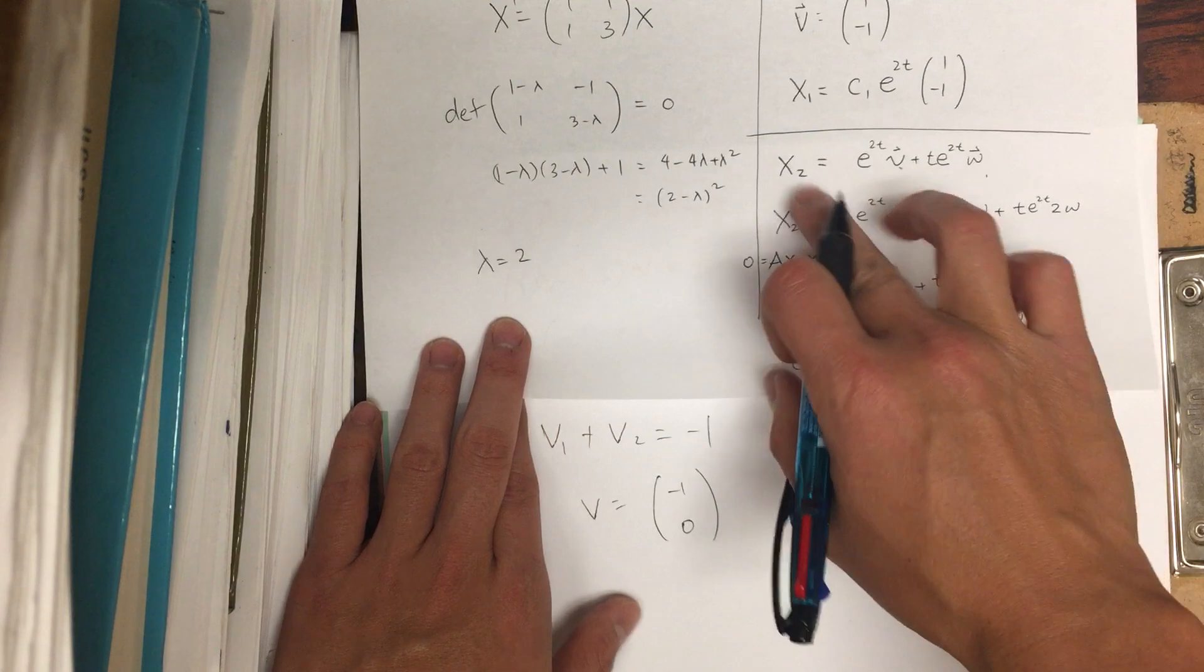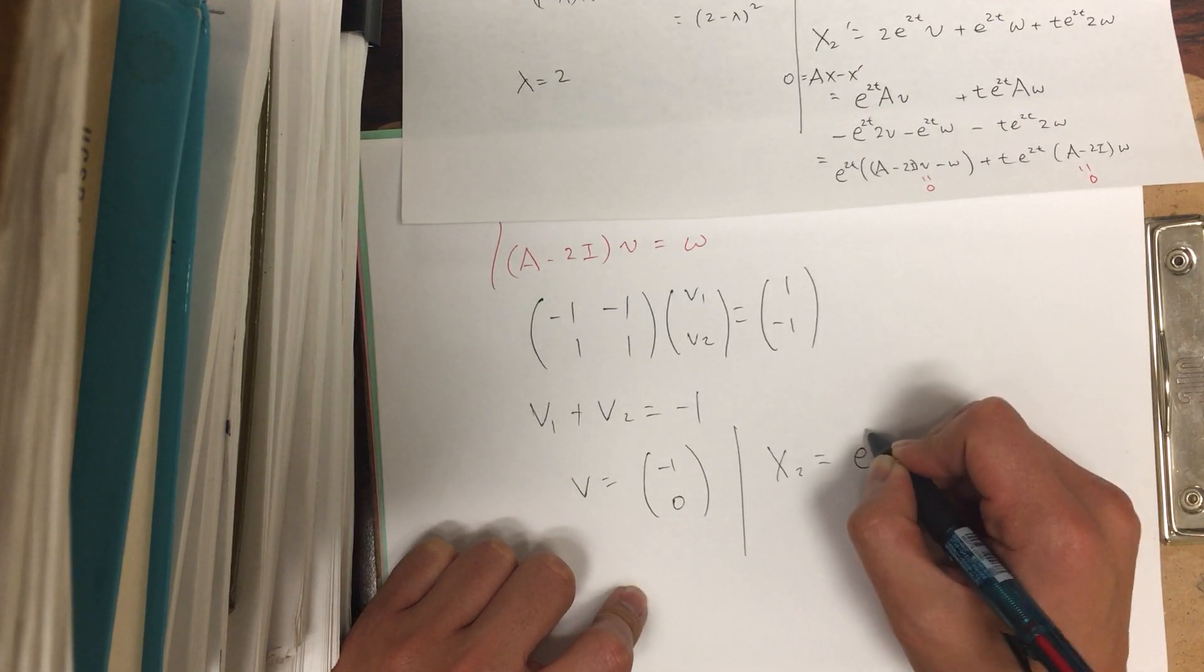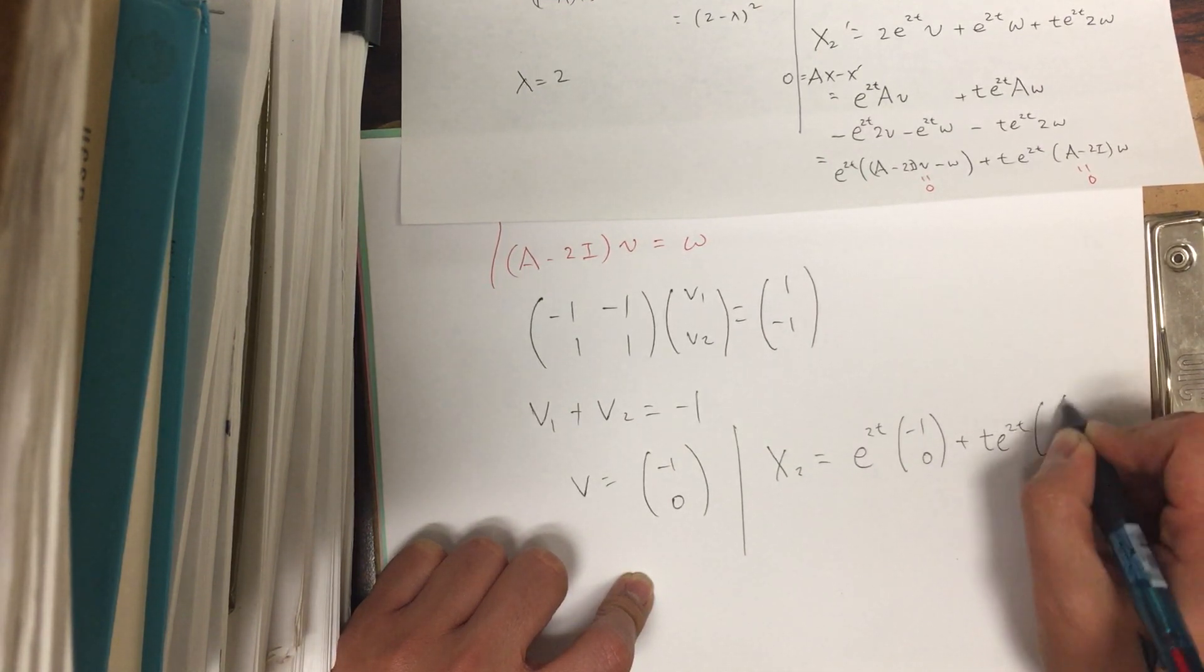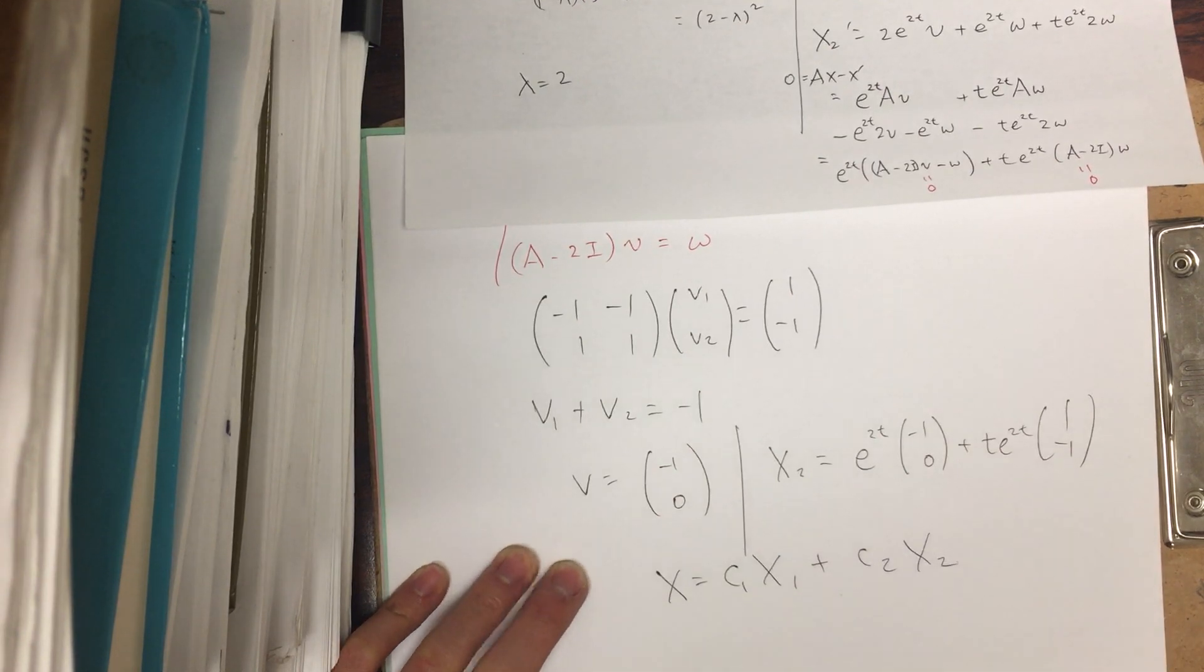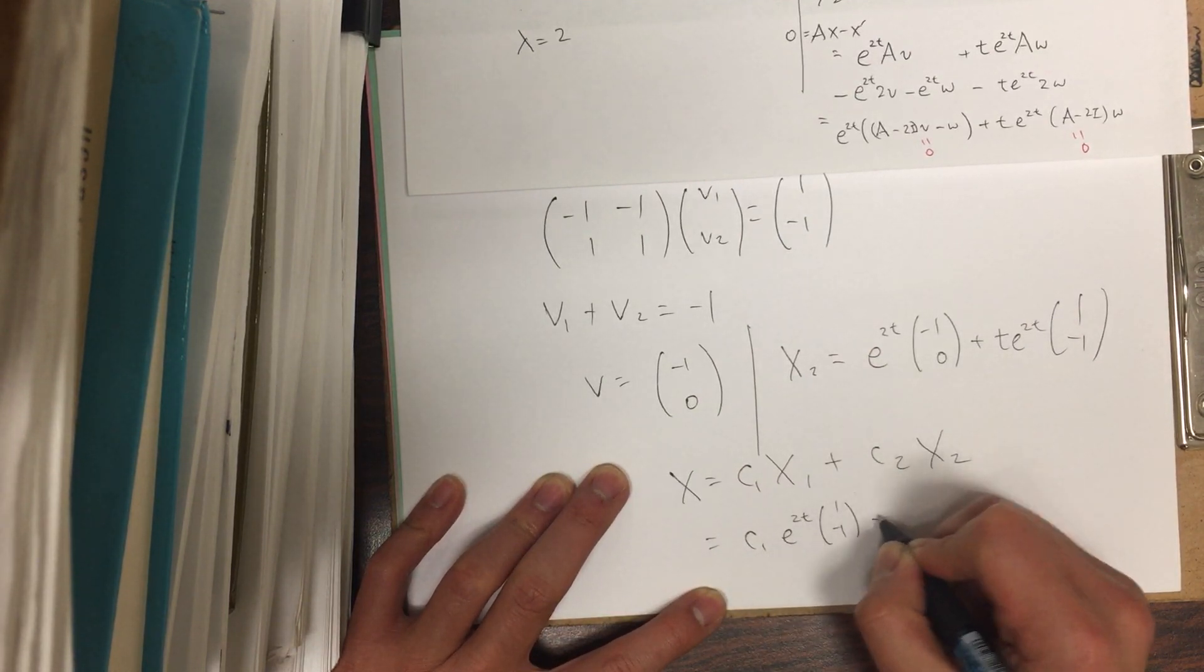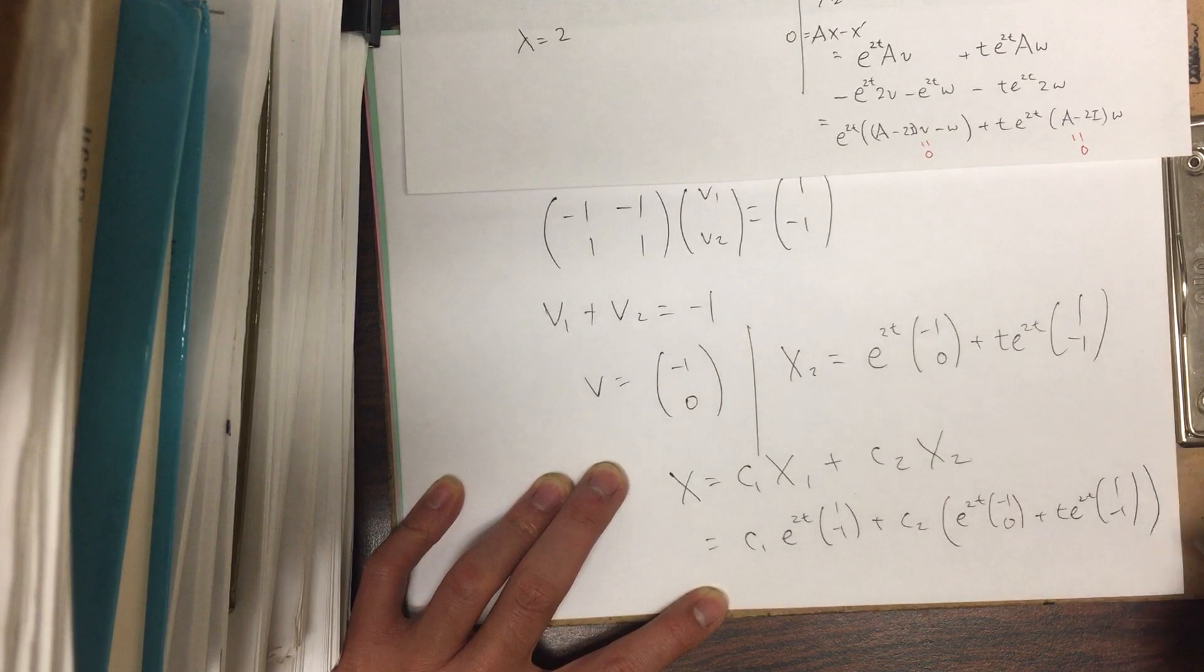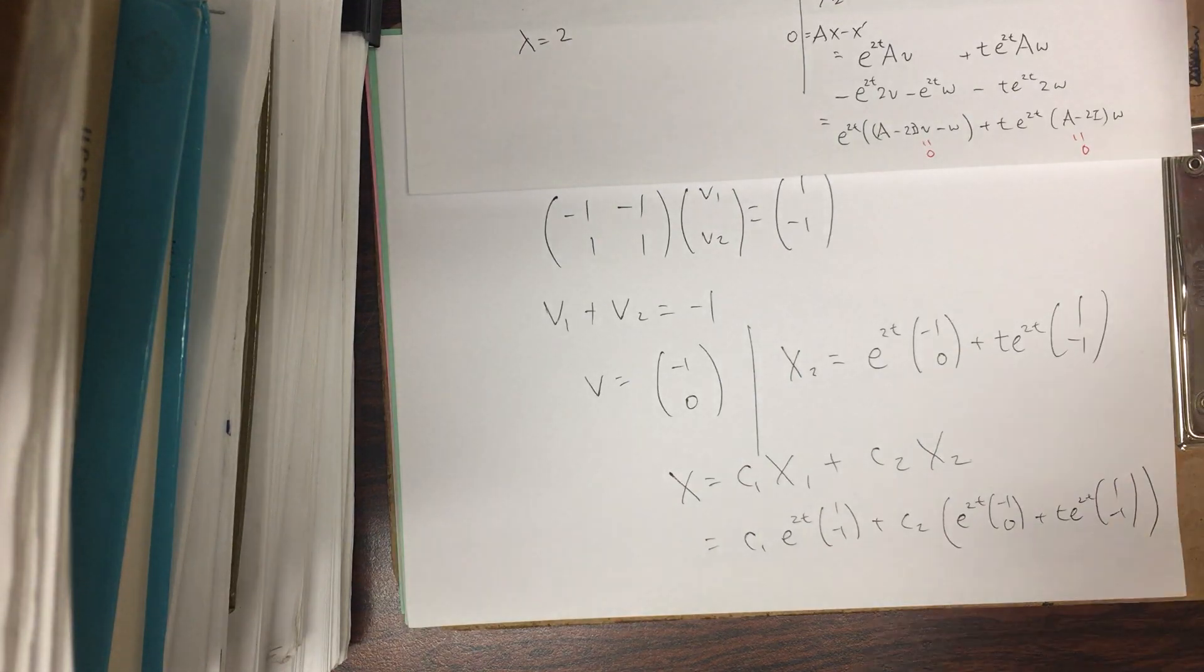And so now we plug it in back into this x2. So a second solution can be given by e^(2t) v, which is [-1, 0], plus t e^(2t) [1, -1]. Okay. And so your full solution is c1 x1 plus c2 x2, which is equal to c1 e^(2t) [1, -1] plus c2 times all of this, e^(2t) [-1, 0] plus t e^(2t) [1, -1]. Okay. And so that is what you do when you have a repeated eigenvalue for the 2x2 case.